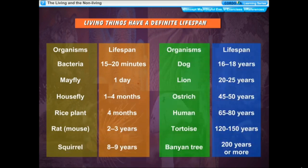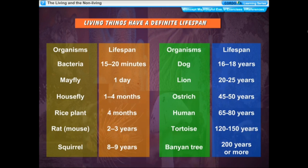Examples of life spans: Bacteria — 15 to 20 minutes; Dog — 16 to 18 years; Mayfly — one day; Lion — 20 to 25 years; House fly — one to four months; Ostrich — 45 to 50 years; Rice plant — 4 months; Human — 65 to 80 years; Rat/mouse — 2 to 3 years; Tortoise — 120 to 150 years; Squirrel — 8 to 9 years; Banyan tree — 200 years or more.